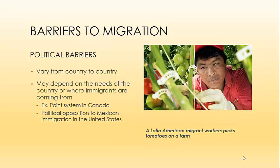On the other hand, there are many political barriers, and these vary from country to country depending on the needs of the country or where immigrants are coming from. In Canada, we use a point system to determine whether or not someone is worthy of immigrating — if you don't qualify under that point system, perhaps lacking the right education or skills, you might be denied entry. There can also be political opposition — for example, the rhetoric and opposition to Mexican immigration in the United States might prevent many Mexicans from legally entering the country, even though they are valuable and needed in farm work and agricultural work throughout North America. Here we see a Latin American migrant worker working on a tomato farm in Leamington, Ontario.